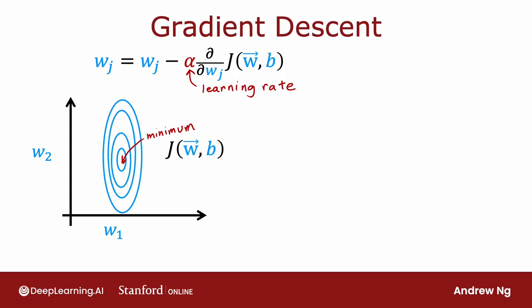Now, if you were to start gradient descent down here, one step of gradient descent, if alpha is small, may take you a little bit in that direction, then another step, then another step, then another step. And you notice that every single step of gradient descent is pretty much going in the same direction.